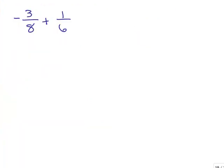Here's our first problem. We're adding fractions that have different denominators and we're also adding a negative and a positive number. So we have to use the rules for adding positive and negative numbers and we also have to use the rules for adding fractions, which means we need a common denominator.